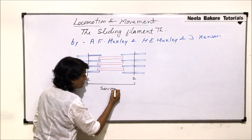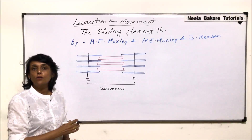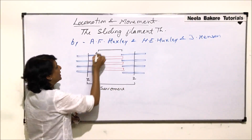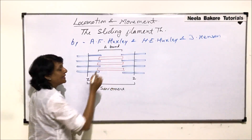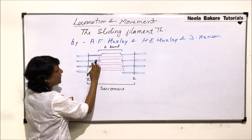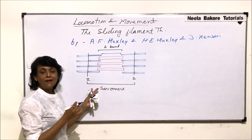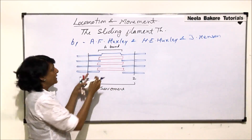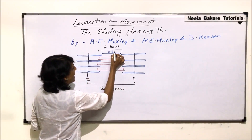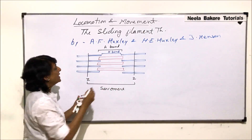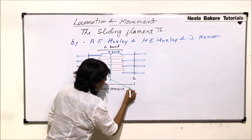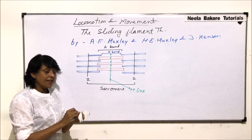From Z line to Z line we call it a sarcomere, and this is the structural, functional, or contractile unit of the muscle fiber. The area where we find the complete myosin thread we call the A band. Inside the A band, the region where we have only myosin is known as the H band, and in the middle there is one line made up of myomesin, known as the M line.